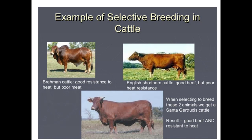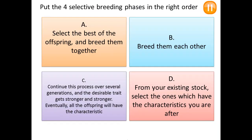Another example is the selective breeding between Brahman cattle and English Shorthorn. The Brahman has good resistance to heat but poor meat quality. The English Shorthorn has good meat but poor heat resistance. After selective breeding, we get Santa Gertrudis cattle with both characteristics. You choose these two animals for their characteristics, breed them together, and end up with one animal that has both desired traits.